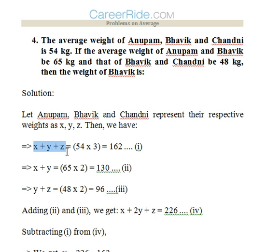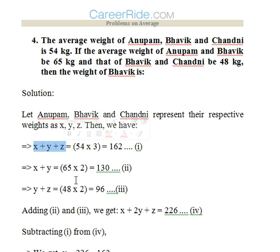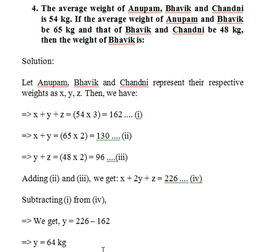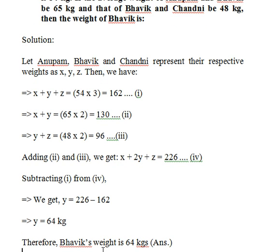X plus Y plus Z equals 54 into 3, which gives equation 1: X + Y + Z = 162. Average weight of Anupam and Bhavik is 65, so X + Y = 130. Average weight of Bhavik and Chandni is 48, so Y + Z = 96. Adding equations 2 and 3: X + 2Y + Z = 226. Subtracting equation 1: Y = 226 minus 162 = 64 kg. So Bhavik's weight is 64 kg.